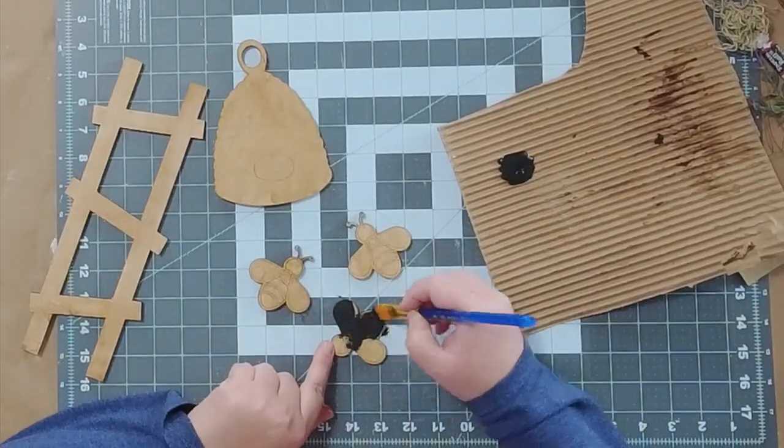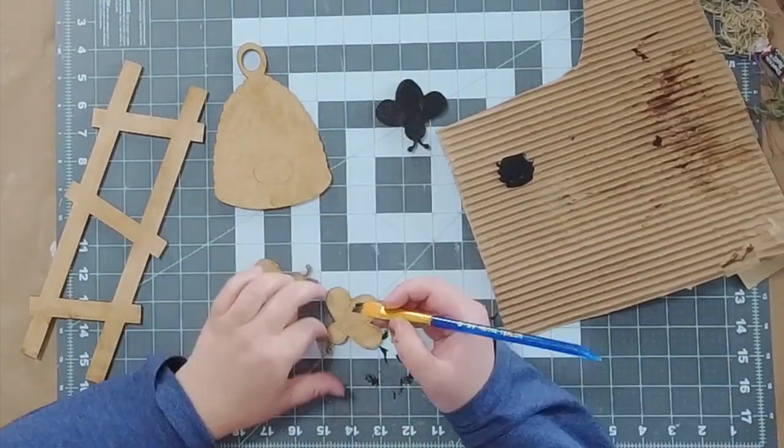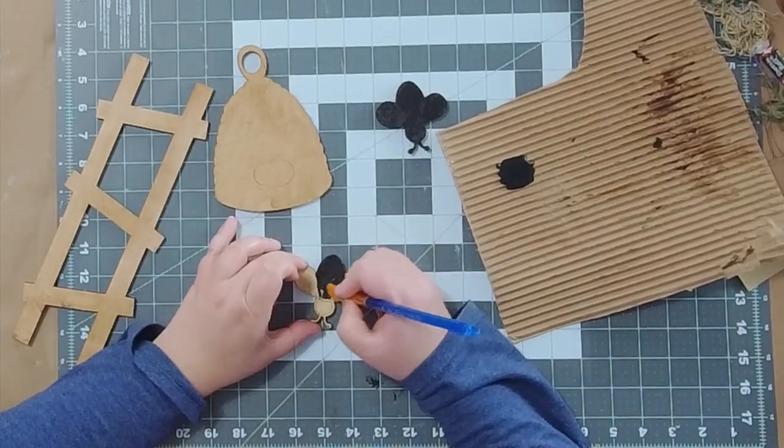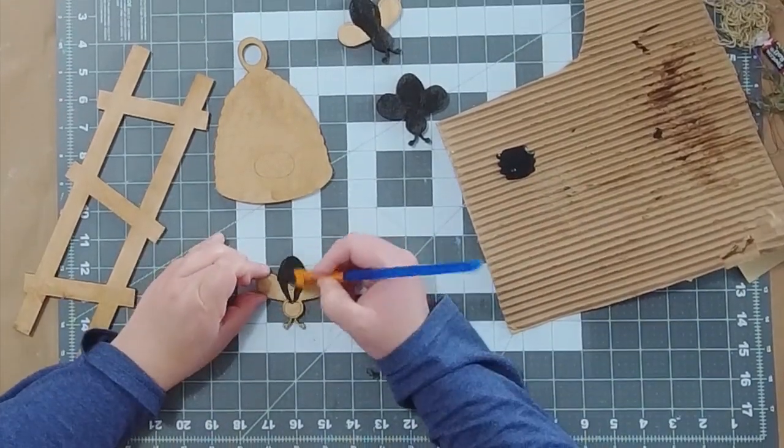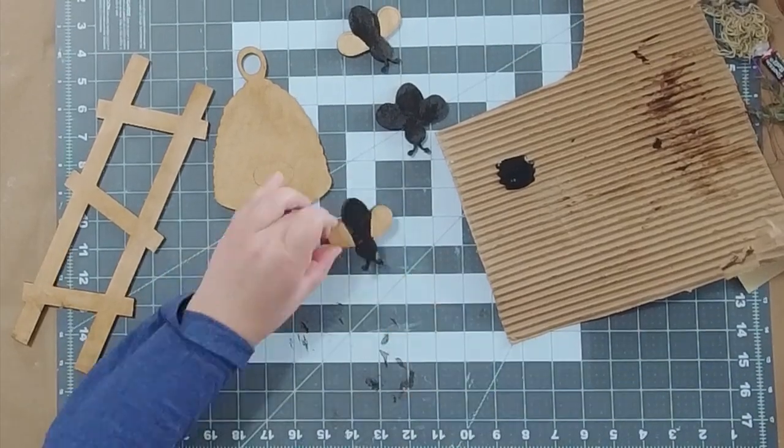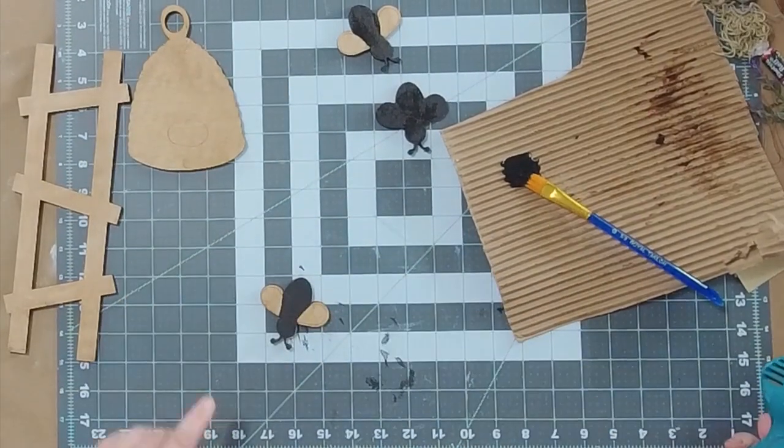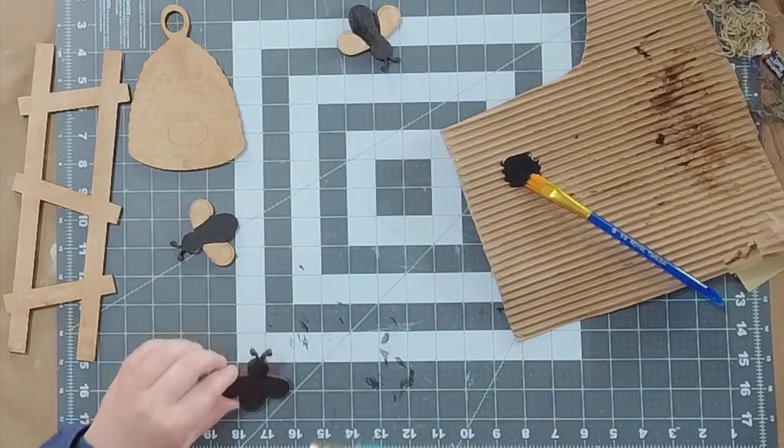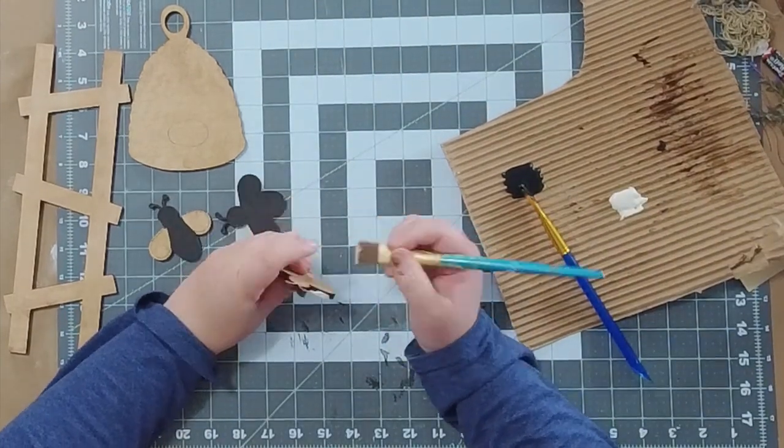Once it's nice and dry, you're going to paint your bees. Now I messed up on this one and painted the whole thing black. You don't want to do that. You want to paint it like I'm painting these last two here. You want to kind of follow the lines for the body of the bee.